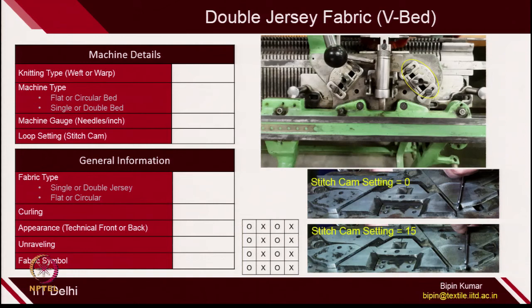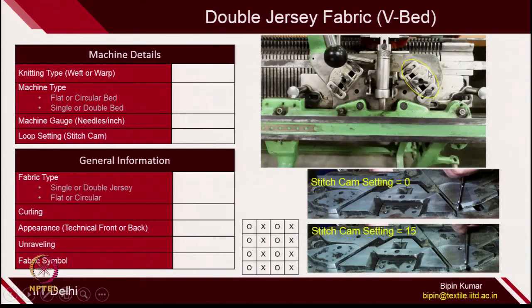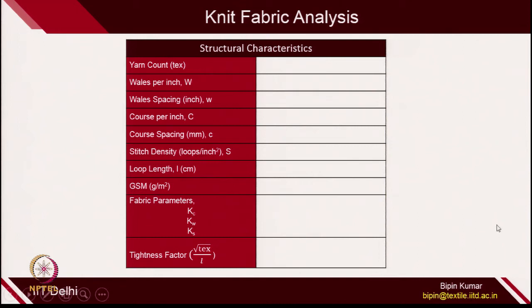Because if any of this information is incomplete, you cannot produce consistent fabric and analysis will be different. My suggestion: whenever you go for doing any analysis and if you are making the fabric by yourself, you must have all this information ready in front of you. Stitch cam setting, for example, here the stitch cam setting is approximately around 7 — between 0 to 15, the stitch cam setting is 7. After that, you can go for a structural analysis. You can make some calculations starting from yarn count, wales per inch, courses per inch, stitch density, loop length, GSM, fabric parameters, tightness factors. These fabric parameter and tightness factor I am going to cover in next few weeks.